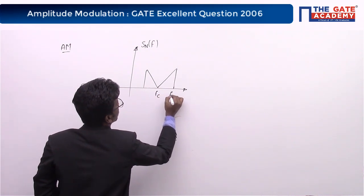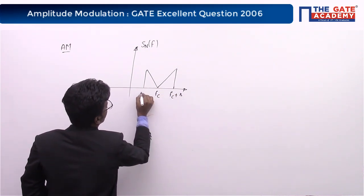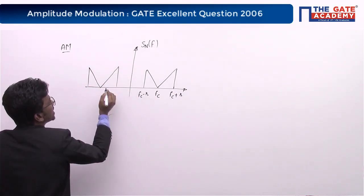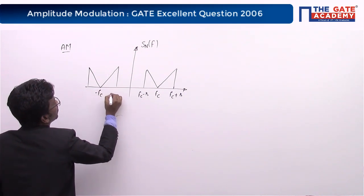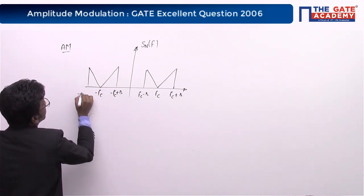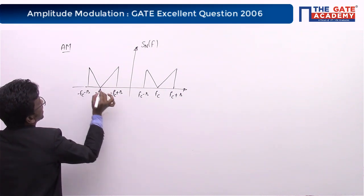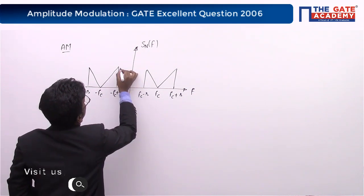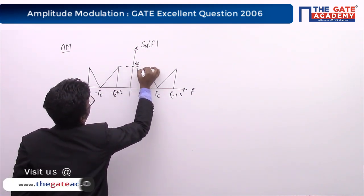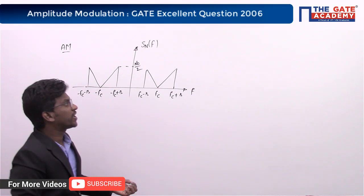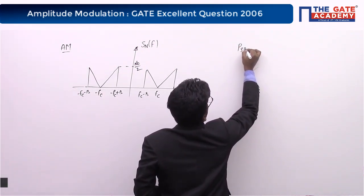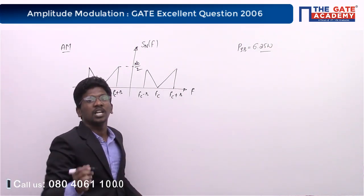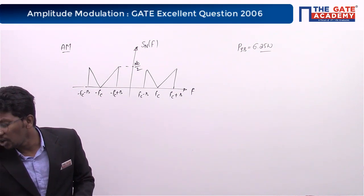The PSD diagram shows triangular shapes centered at ±f_c. At positive frequencies, the triangles span from f_c − B to f_c + B. At negative frequencies, from −f_c − B to −f_c + B. The y-axis shows power value N₀/2. Using the first question's conclusion, the sideband power is 6.25 watts.